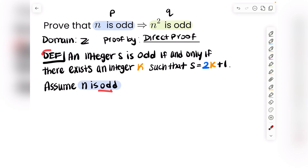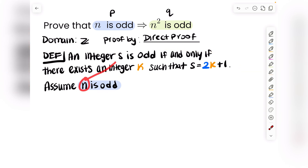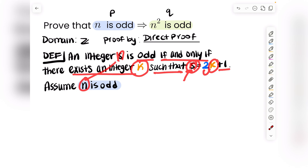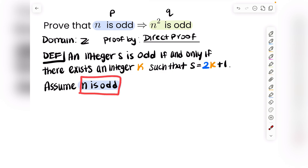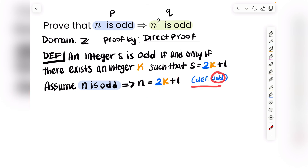What does it mean for n to be odd? We have a definition: an integer n is odd if and only if there exists another integer k such that n = 2k + 1. Because we are assuming n is odd, this implies that n = 2k + 1 for some integer k. Here we use the definition of an odd integer.